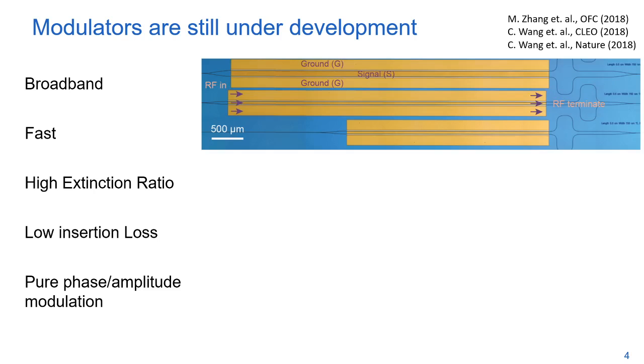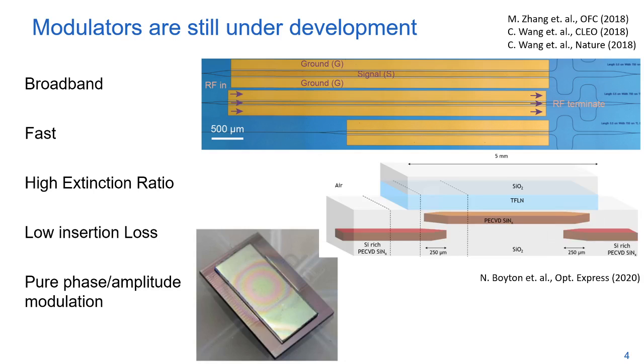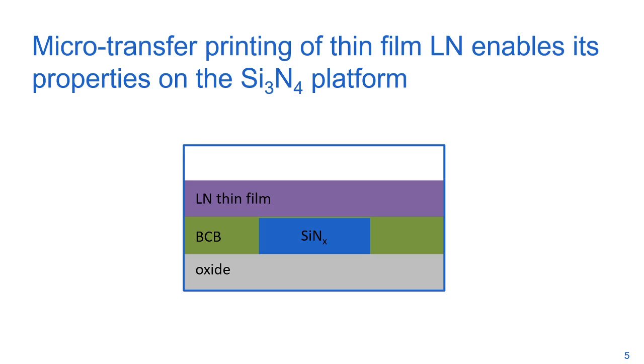The group of Marco Loncar at Harvard has shown 100 gigahertz electro-optic modulation using monolithic thin films of lithium niobate. This is very promising, however it's a dedicated technology and not CMOS compatible. Hybrid integration of lithium niobate has also been done by multiple groups using wafer bonding techniques.